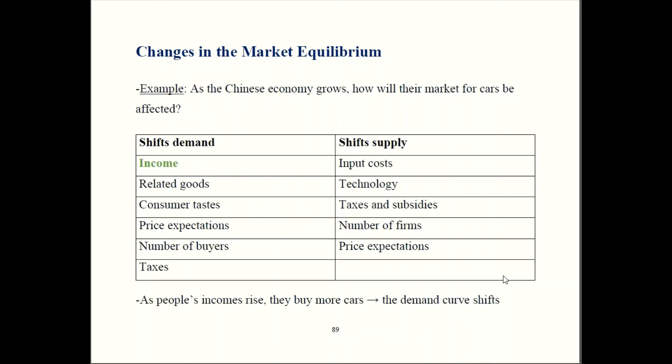Same process — we look at which factor shifts which curve. A growing economy in China is going to lead to higher income for Chinese people, and income shifts demand. Now we figure out the direction of the shift. We said earlier that with income, it depends on whether the good is a normal good or an inferior good. Normal goods are ones you buy more of when your income goes up — most goods are normal goods, our example was restaurants. Inferior goods are ones you buy less of when income goes up; the standard example was ramen noodles.